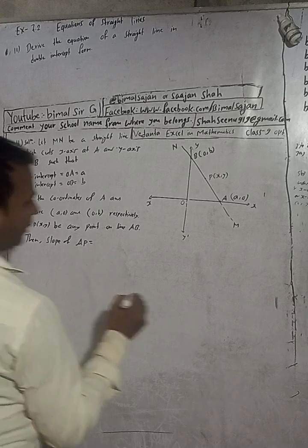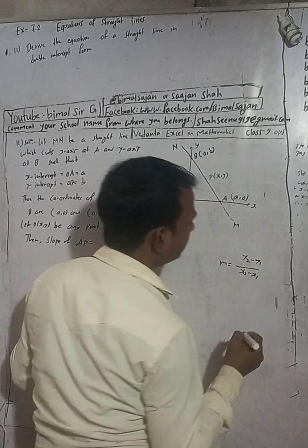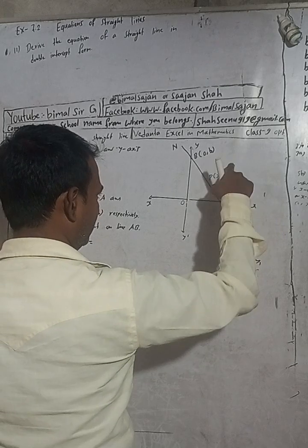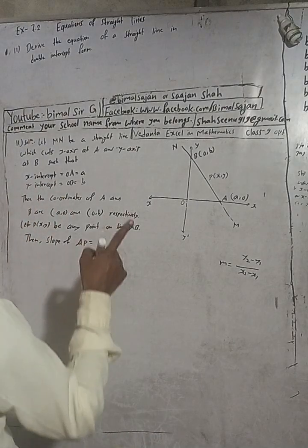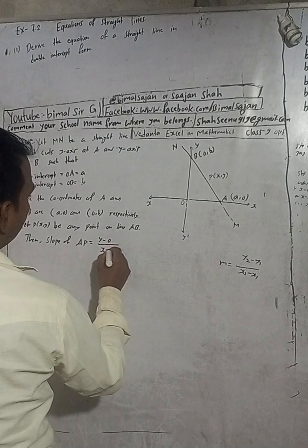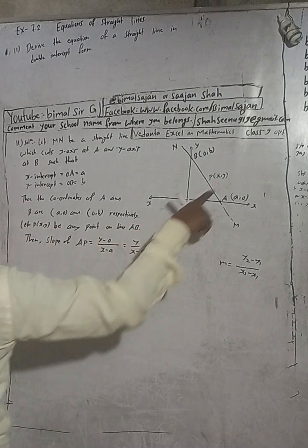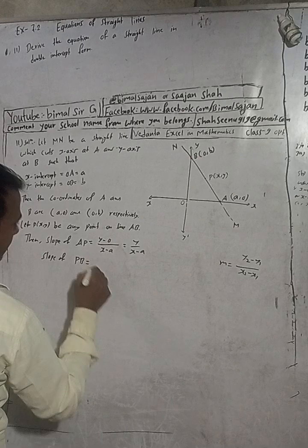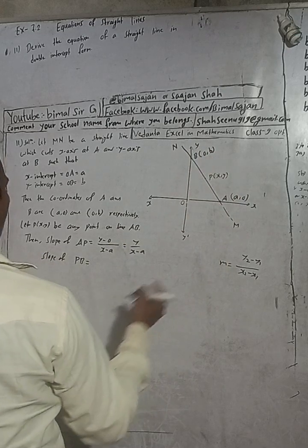Using the slope formula, the slope of AP equals (y minus 0) divided by (x minus a), which simplifies to y divided by (x minus a). The slope of PB equals (b minus y) divided by (0 minus x), which gives (b minus y) divided by (negative x).